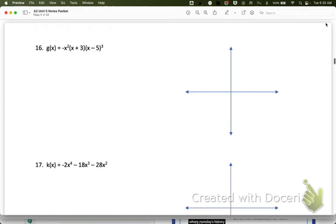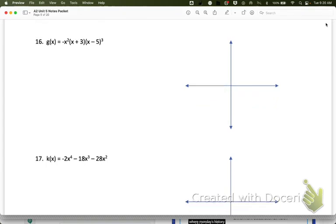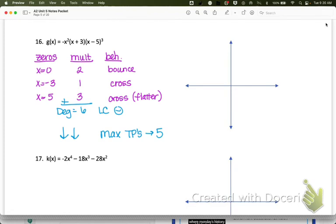So let's look at number 16. Go ahead and see if you can gather all of the information. Pause your video for a second. Find your zeros, multiplicities, and behavior. End behavior and turning points. And then come on back to me. All right, here's what we should have. Now notice with x equals 5, since the multiplicity is 3, 3 is odd, but it's a bigger multiplicity. So it's going to cross, but it's going to flatten out a little bit at that point. So that's good to keep in mind.